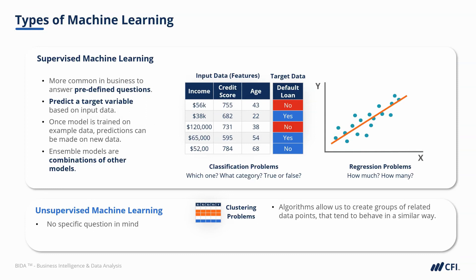This could be customers that exhibit similar behaviours, cells that respond in similar ways, or streaming users with similar viewing behaviours. Another common category of unsupervised models is variable reduction, which aims to identify the most important columns or features in a dataset.